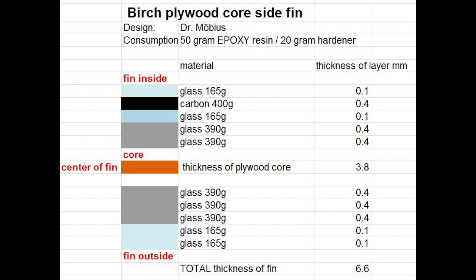The thinner your core is, the stiffer and stronger your fin is going to be. To calculate the thickness of each layer, you take the weight in kilos per square meters. And this leaves you with the thickness of the layer in millimeters.